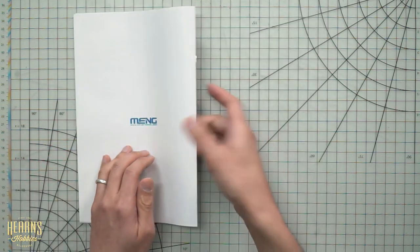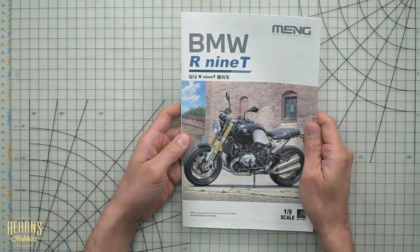And that's it. So that's the Meng BMW R9T, absolutely beautiful kit. Quite a nice big scale, 1/9 scale. And it has some really luxurious parts such as die cast metal, photo etch and rubber parts. So if you're into a real challenge of building and like something a little bit bigger, this is a really nice kit for you to do. So again, that's a Meng 1/9 scale BMW R9T.